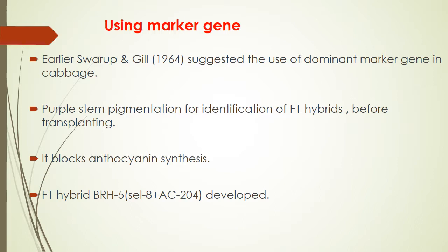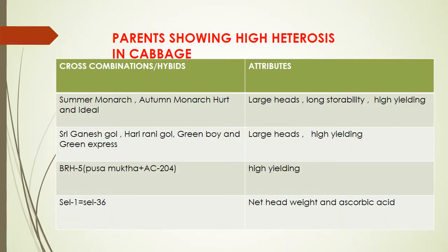Using marker gene: use of dominant marker is recommended in cabbage — purple stem pigmentation for identification of F1 hybrid before transplanting. It blocks anthocyanin synthesis. F1 hybrid BRH-5 was developed by this technique using the dominant gene. Parents showing high heterozygosity in cabbage — cross combinations are Summer Monarch, Autumn Monarch, Herd and Ideal for large head, long storability, and high yielding. Shri Ganesh Gold, Harirani Gold, Green Boy and Green Express for large head and high yielding. Hybrid BRH-5 is for high yielding and Selection-1 is for net head weight and ascorbic acid.